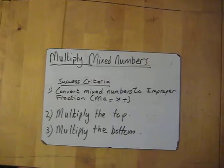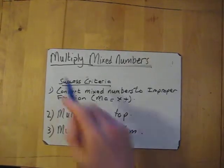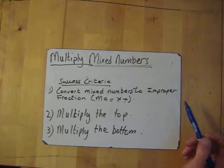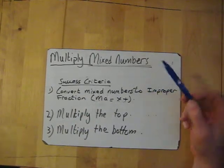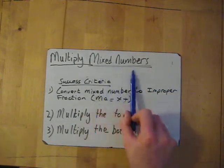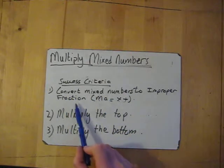Right, multiplying mixed numbers. Again, so multiplying mixed numbers, success criteria right here for this. Hopefully you're seeing a common theme here. What we need to do with the mixed numbers is we need to convert the mixed numbers into improper fractions.